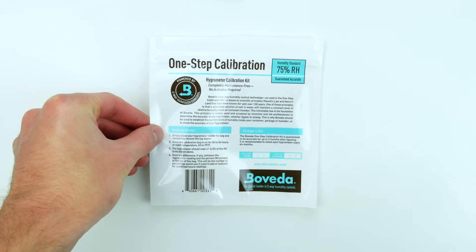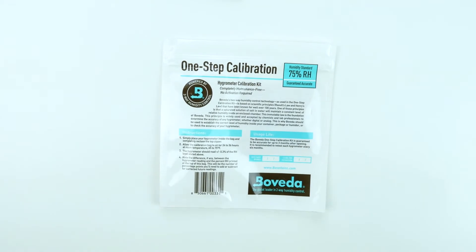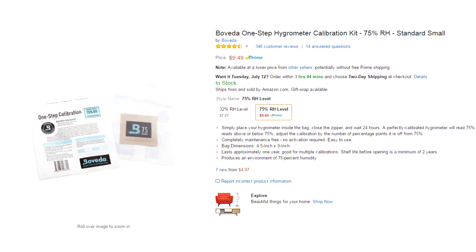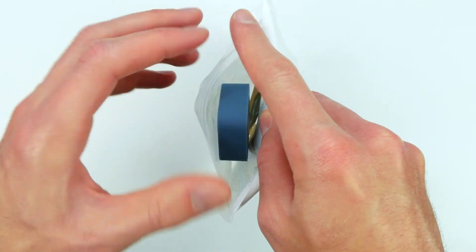What we prefer is the Boveda One-Step Hygrometer Calibration Kit. It's available on Amazon for less than $10. Just open the bag and seal your SensorPush inside.